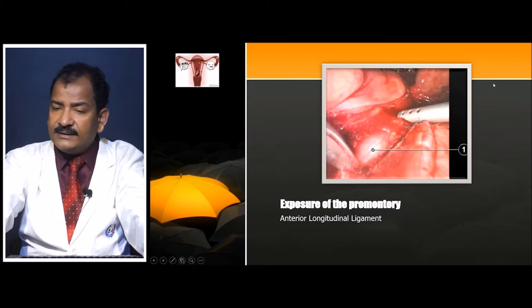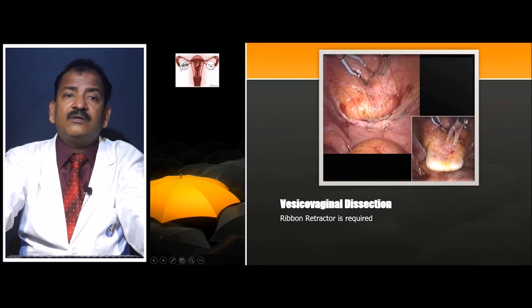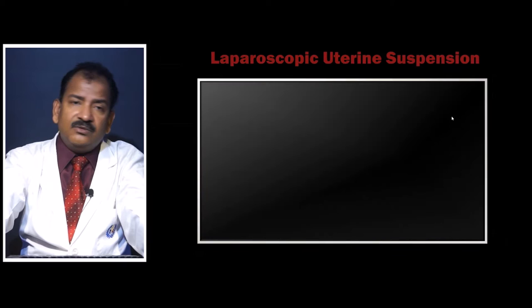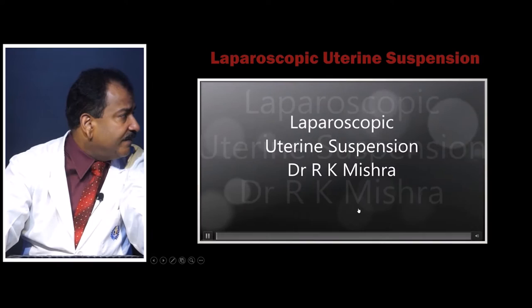The anterior longitudinal ligament, which you may have seen during dissection, is the main point to fix the mesh, either with a tacker or suture. If the uterus is already removed, dissection is done with a ribbon retractor, then the peritoneum is closed. Laparoscopic uterine suspension has already been covered separately.